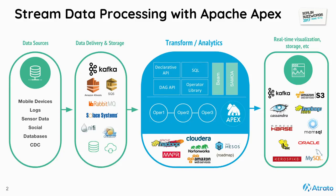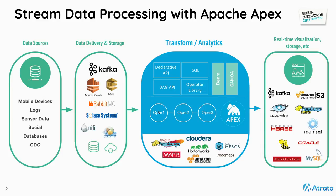Apex is a native stream processing engine and a framework. It has APIs, a library, and runs on clusters. Right now it's a Hadoop-based system, which means it requires Hadoop YARN as a resource manager to get compute resources. It also uses HDFS for some storage needs, but the platform itself — the streaming of data between different processes — is part of Apache Apex.